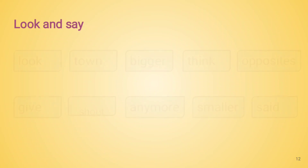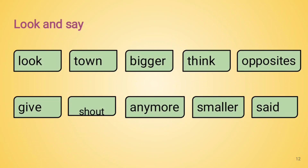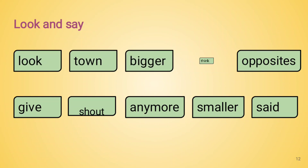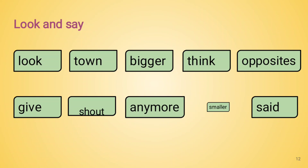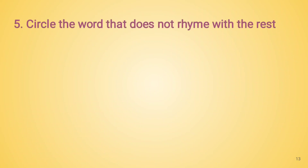Now let us see the next question: Look and say. Now let us see the next activity: Circle the word that does not rhyme with the rest. Here we have some sets of words. We have to read the words carefully and then circle the word which is not a rhyming word.